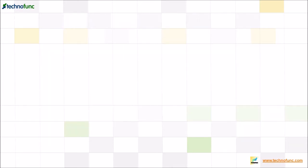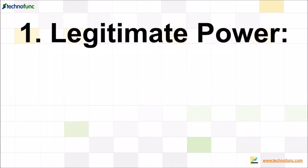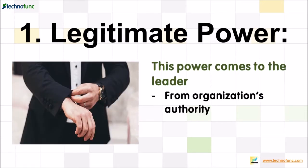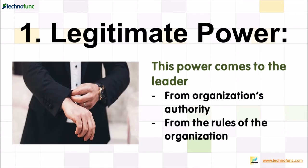The first type of power is legitimate power. This power comes to the leader when the organization's authority is accepted. It comes from the rules of the organization. For example, parents, teachers, managers, police, etc. have legitimate power only when their authority is accepted in the positions they hold.